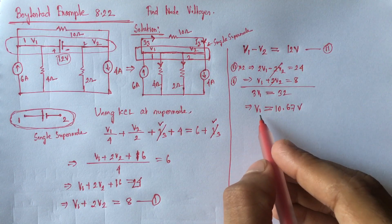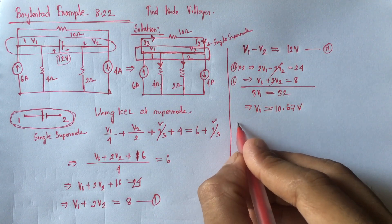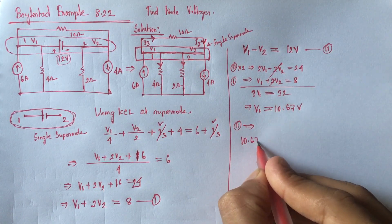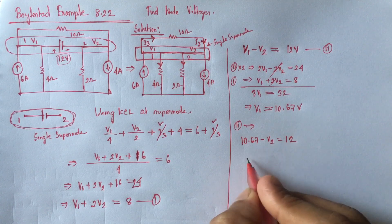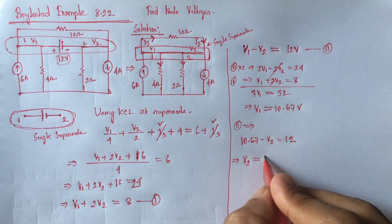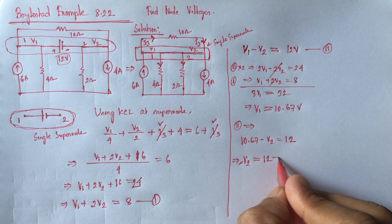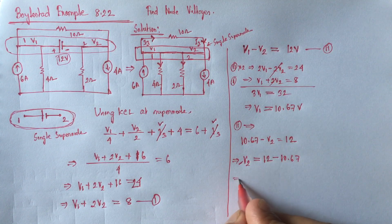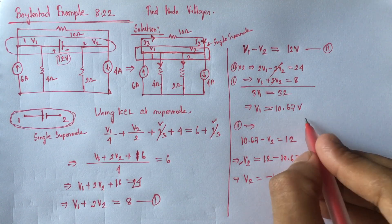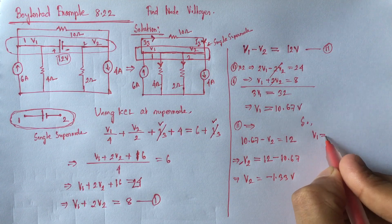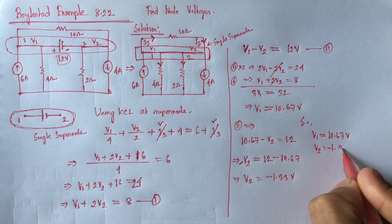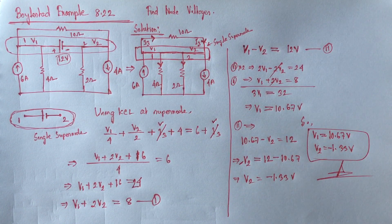Now, by using V1 in equation 2 we will get V2. From equation 2: 10.67 minus V2 equals 12, that is V2 equals 12 minus 10.67, so V2 equals minus 1.33 volts. So we get V1 equal to 10.67 volts and V2 equal to minus 1.33 volts. These are the answers. Thanks for watching.